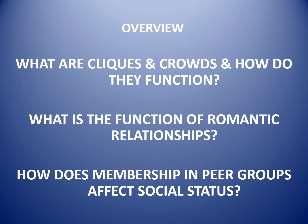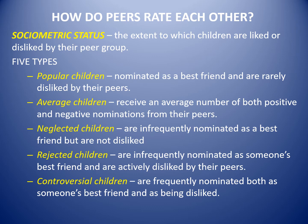The first concept is how peers rate each other, which sociologists call sociometric status. They ask to what extent children are liked or disliked by their peer group. We saw one application of this in a previous lecture discussing Roland Fryer's study on 'acting white,' where popularity varied based on grades across ethnic groups. Generally, researchers identify five types of children by asking two nomination questions.